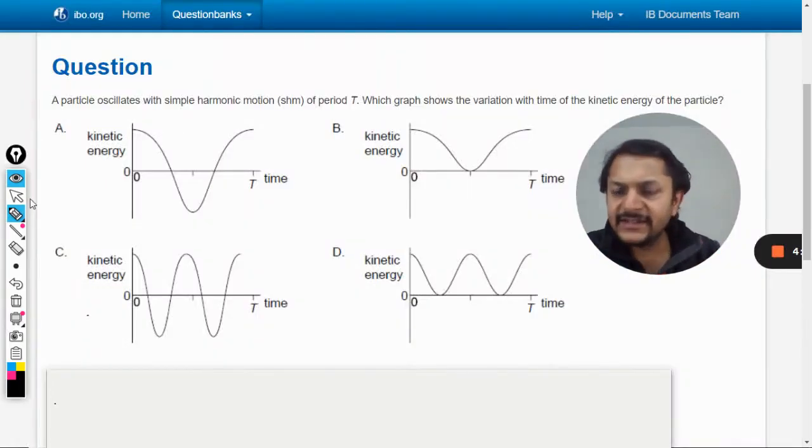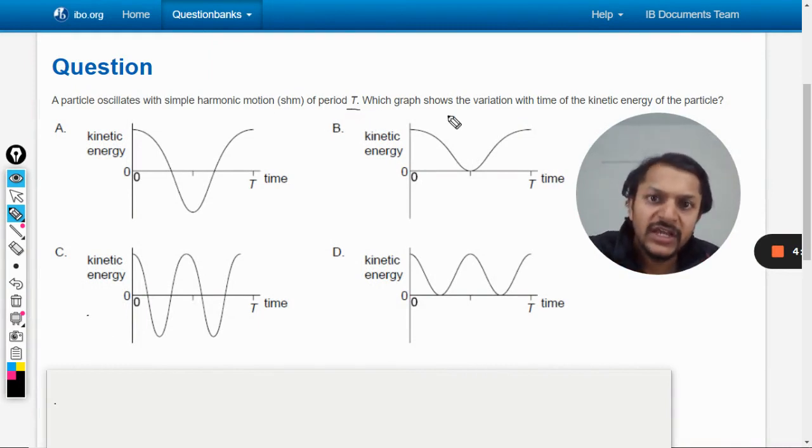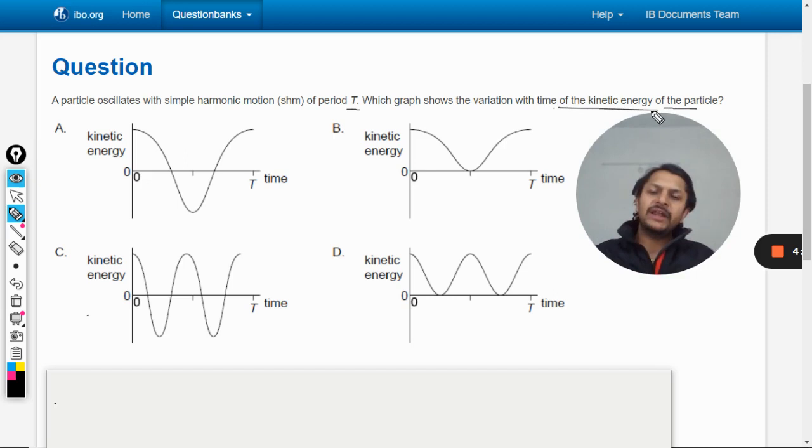Okay students, let us see how we are going to solve this question. A particle oscillates with simple harmonic motion with time period capital T. Which graph shows the variation with time of the kinetic energy of the particle? So we want to comment on the kinetic energy of the particle undergoing simple harmonic motion.